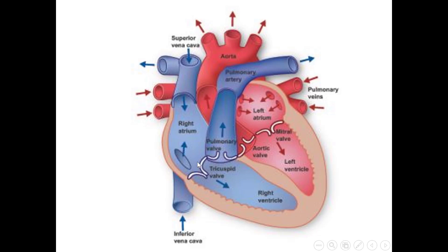From the right atrium, the deoxygenated blood will go into the right ventricle of the heart through the tricuspid valve. Tricuspid — 'tri' means three, and 'cusp' refers to the leaflets present in the valve. They act just like doors that can open and close. These are unidirectional valves which allow only one-direction flow of blood, from the right atrium to the right ventricle.